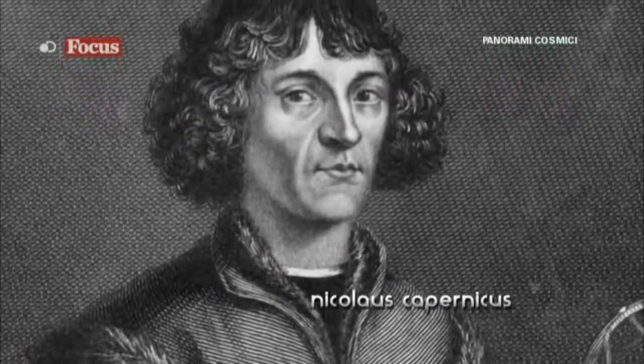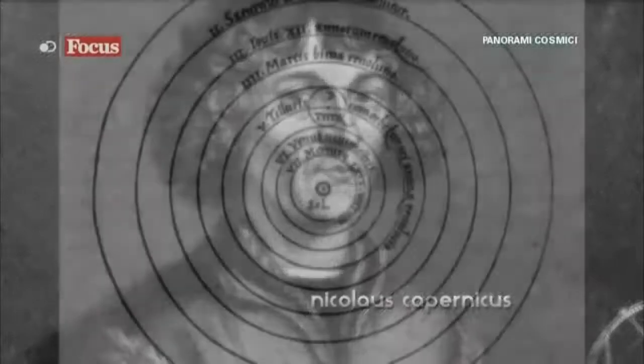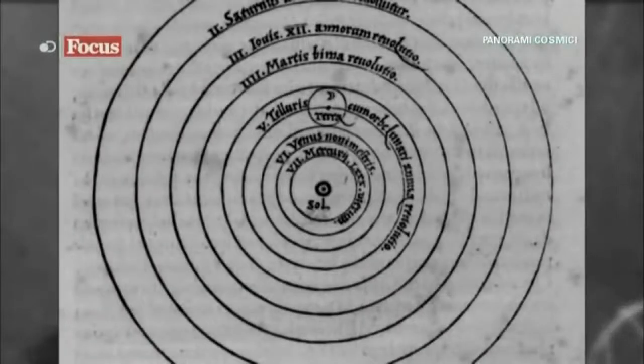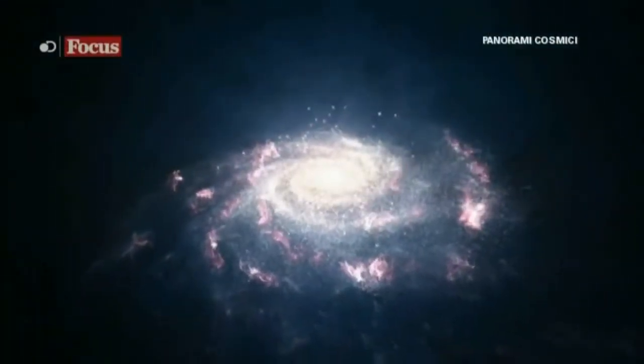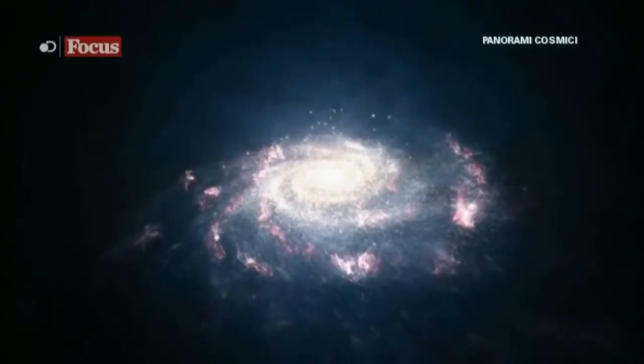Secoli prima era stato Nicola Copernico a spingere la Terra lontana dal centro del Sistema Solare mettendo il Sole al suo posto. Ora era il turno di Shapley spingere il Sistema Solare lontano dal centro della Via Lattea.